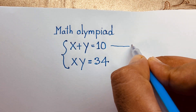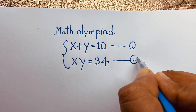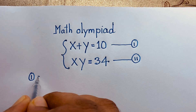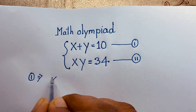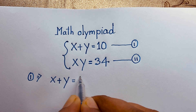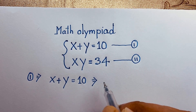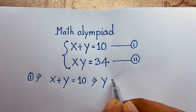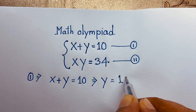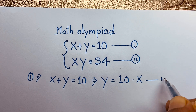So this is our first equation and this is our second equation. According to the first equation, I take x plus y is equal to 10. Now, if I move x to the other side, it will be negative x, so y will be 10 minus x. This is our third equation.